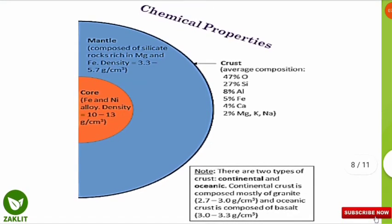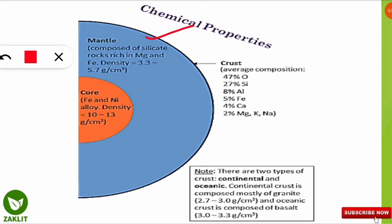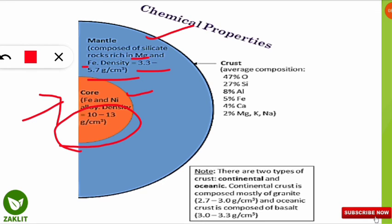Here you will know the chemical properties of all three layers — a frequent exam question. The crust's average composition is: oxygen 47%, silicon 27%, aluminum 8%, iron 5%, calcium 4%, and others including magnesium, potassium, and sodium at 2%. The mantle is composed of silicate rock rich in magnesium and iron, with a density of 3.3 to 5.7 g/cm³. The core is an iron-nickel alloy with a density of 10 to 13 g/cm³. The continental crust has a density of 2.7 to 3 g/cm³, while the oceanic crust has a slightly higher density of 3 to 3.3 g/cm³.